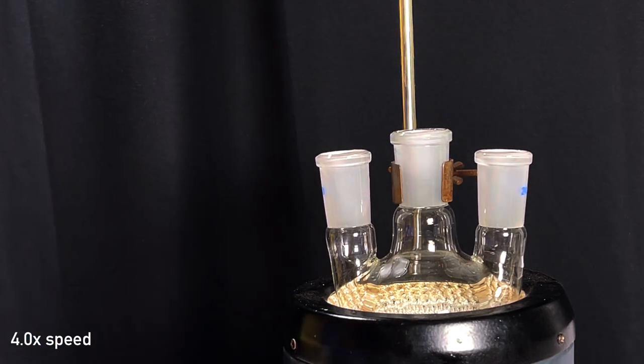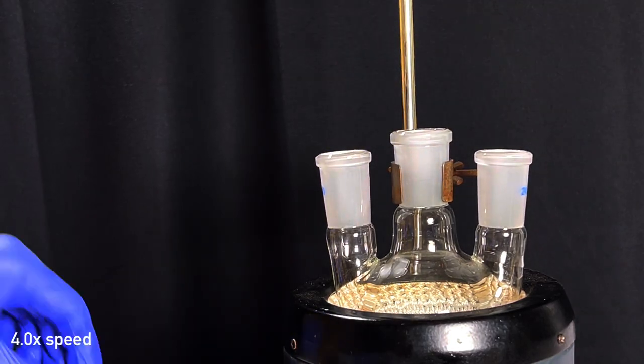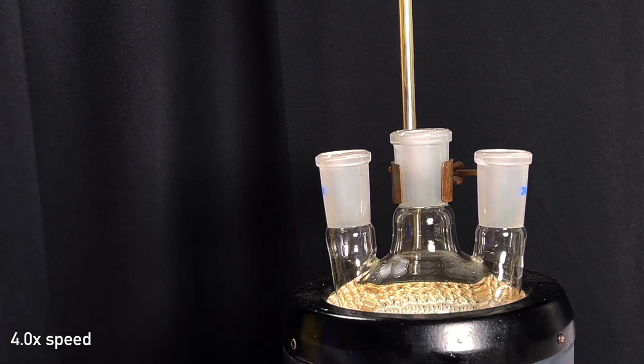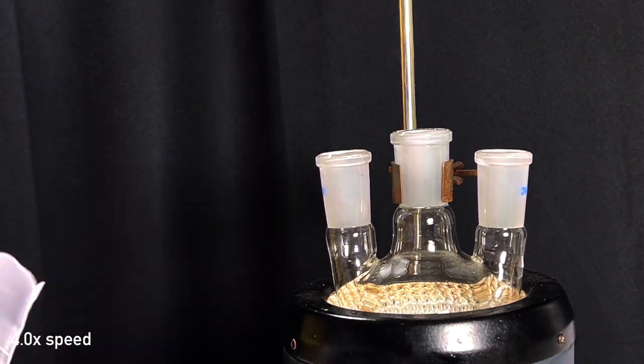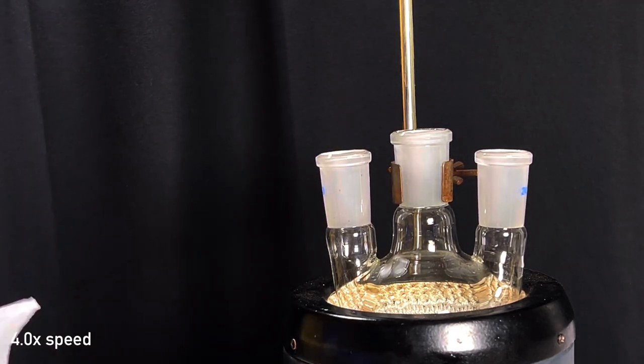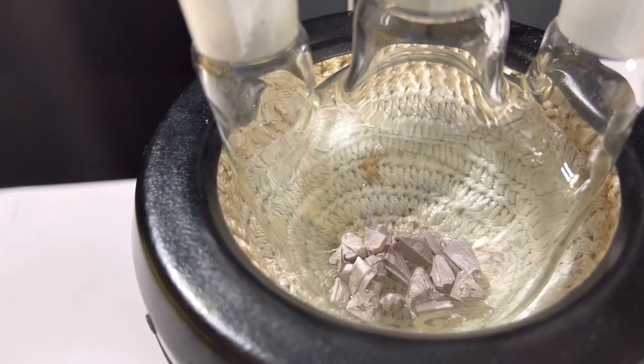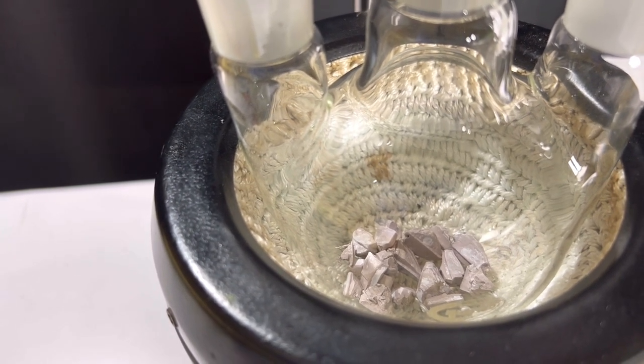Sodium has to be first dried from the mineral oil using filter paper and then the outer layer was removed by cutting it out. This will expose the silvery outer surface. This is after the addition of the whole sodium metal.